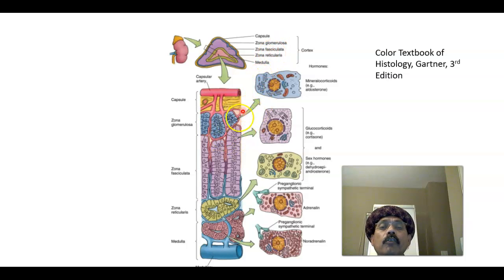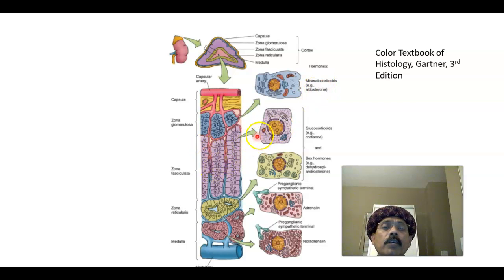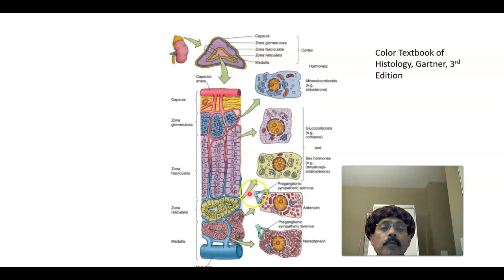From the zona glomerulosa, we have the mineralocorticoid hormone — the most common being aldosterone — which maintains electrolyte balance. From the zona fasciculata, we have glucocorticoids: cortisone and cortisol. From the zona reticularis, we have androgen sex hormones, specifically dehydroepiandrosterone (DHEA).